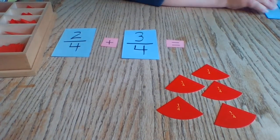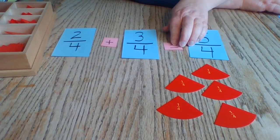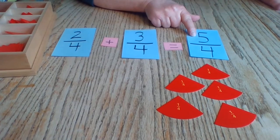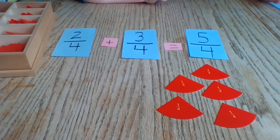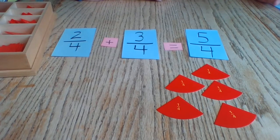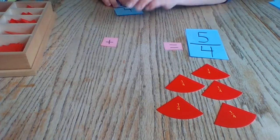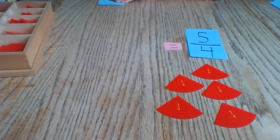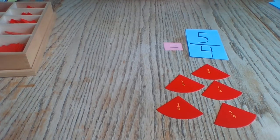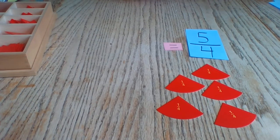This is an improper fraction because the numerator is bigger than the denominator. Let's turn that into a mixed number. A mixed number is a number that has a whole number in it, and a fraction.